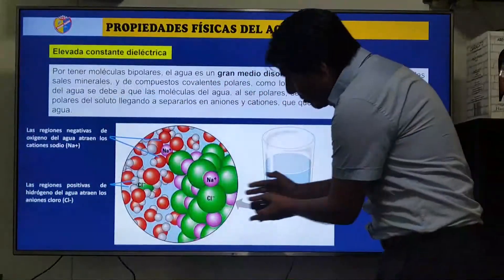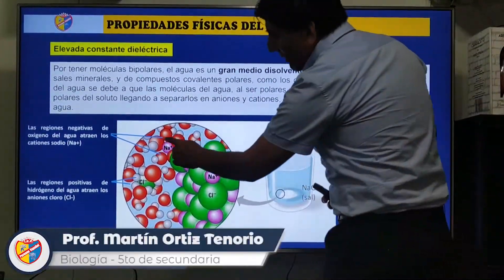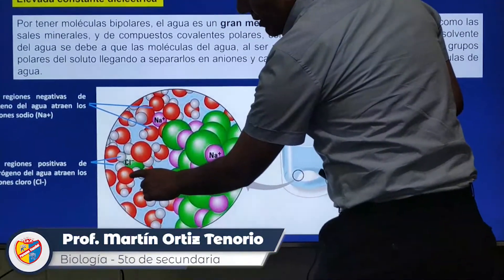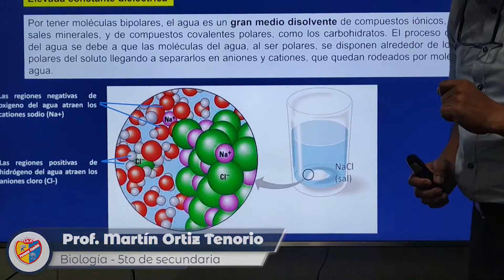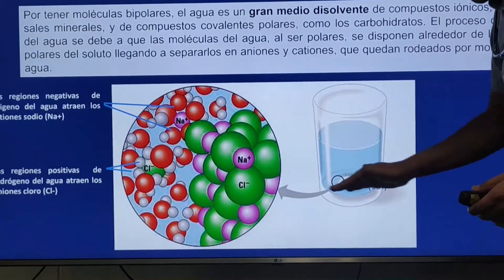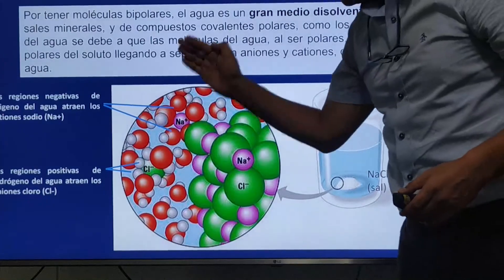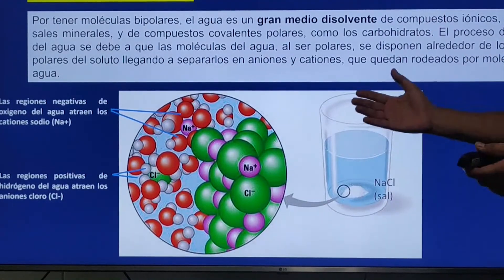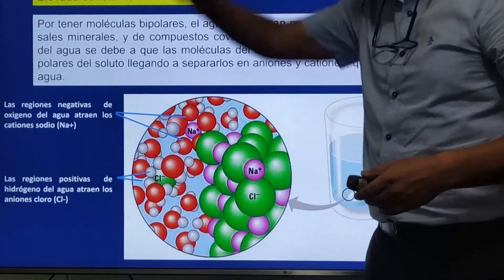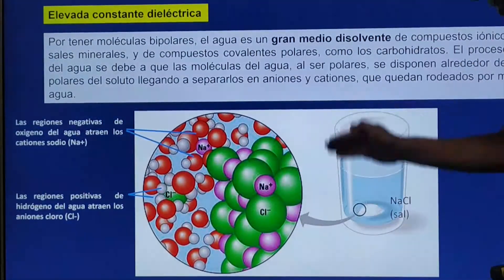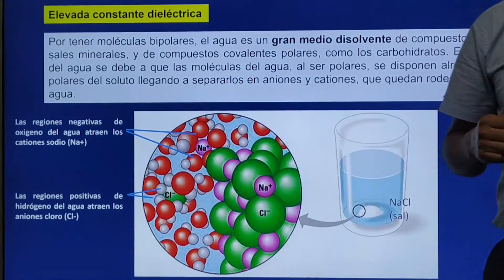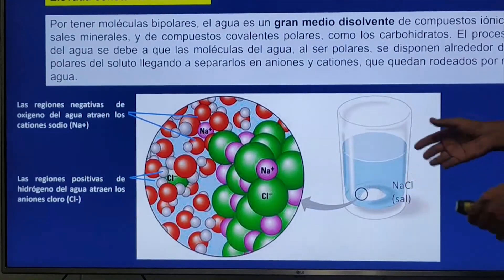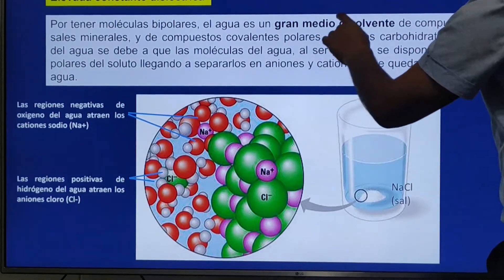En el esquema, lo de rojo representa el oxígeno y lo de plomito el hidrógeno —las moléculas de agua. Como en este vaso hay millones de moléculas de agua, tengo una elevada constante dieléctrica: millones de cargas tanto positivas como negativas. Por eso, al introducir el cloruro de sodio, el agua lo disuelve. Por eso es un gran disolvente.